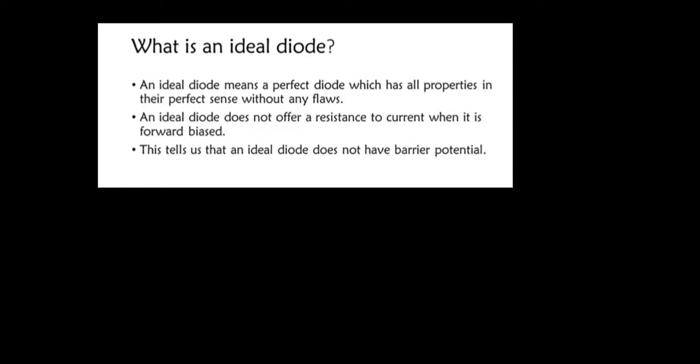The first one we'll talk about is the ideal diode. The ideal diode means a perfect diode, which has all properties in your perfect sense without any flaws. An ideal diode does not offer any resistance to current when it is forward biased. This tells us that an ideal diode does not have a biopotential. Diodes have a biopotential due to the depletion zone formed by the P-N junction.